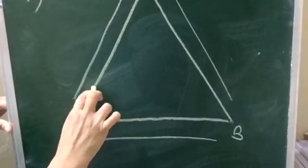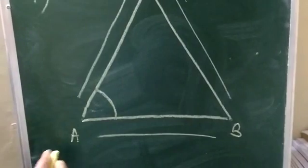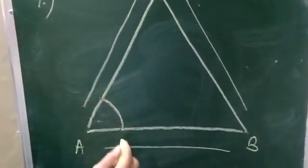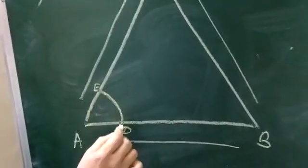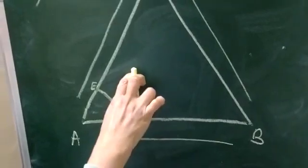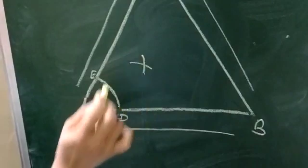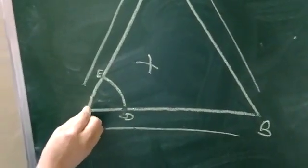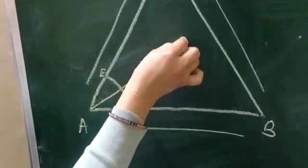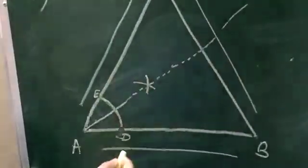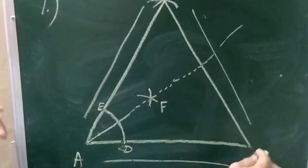Now you have to draw the lines of symmetry. Place the compass on point A, open it a little, and draw an arc. Do likewise from the other side. Join with a dotted line and give it a name — for example, F. Similarly, repeat from point B.